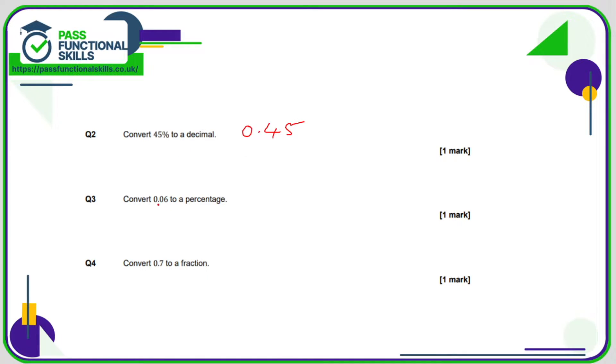To go from a decimal to a percentage we're multiplying by 100 and 0.06 multiplied by 100 is 6%. And 0.7 to a fraction. Well here because we've got one decimal place that means we're dealing in tenths. So 0.7 is simply seven tenths. Always worth checking though can you simplify this fraction? And the answer is you cannot because there's no number that 7 and 10 can be divided by.